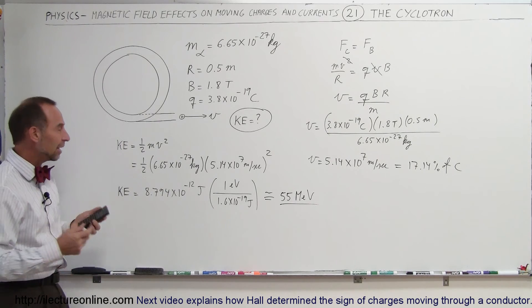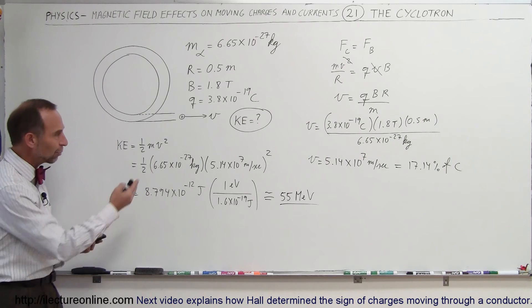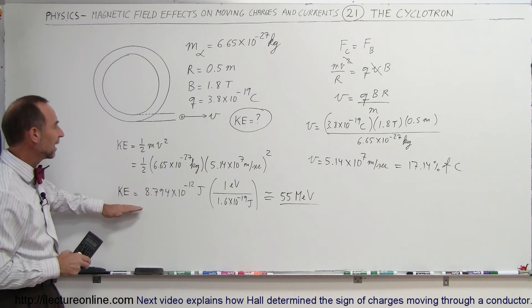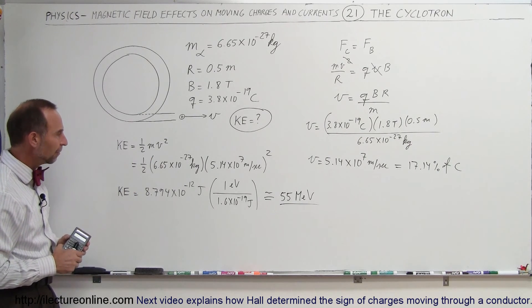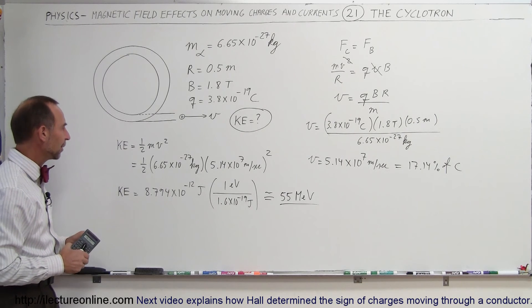Not nearly the amount necessary to get into relativistic speeds, which we see was only 17%. But yet, that's quite a bit of energy in that particular alpha particle.